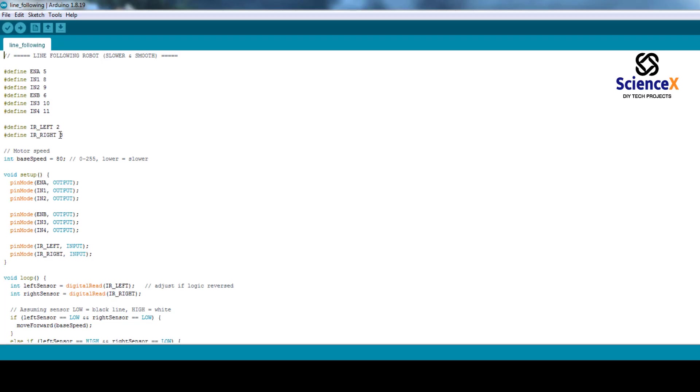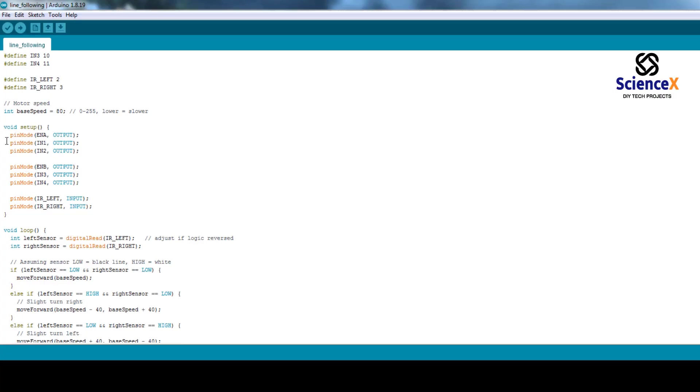Then in void setup section, I wrote input output conditions. Sensors are used as input and motors are used as output mode. I defined here.